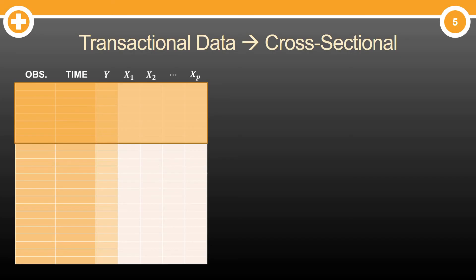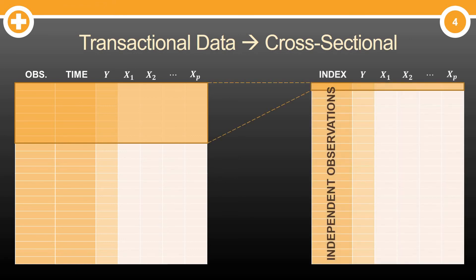You can take this data and make it cross-sectional. Let's imagine the highlighted rows that you see here are a collection of one customer's transactions. I can aggregate them up to one row. Maybe it's the average amount that they've spent overall. So now I can do this with every customer and I have now independent observations that I created from my transactional data set. I can sum up a customer in one row of data.